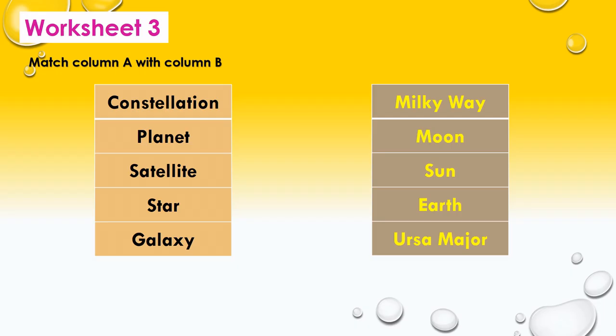Moving to Worksheet 3: Match column A with column B. Column A represents the type and column B represents the examples. Let us do this activity. Constellation—example is Ursa Major. Next one is planet—example of planet is Earth. Next one is satellite—example of satellite is moon. Star—example of star is Sun. The last one is galaxy—example of galaxy is Milky Way.